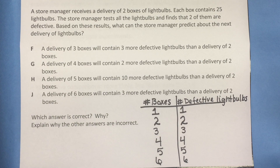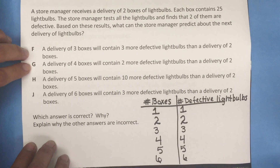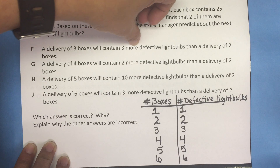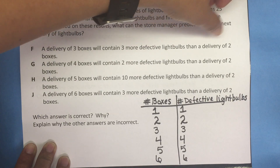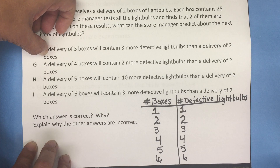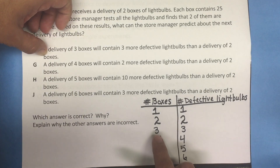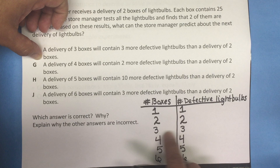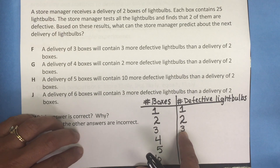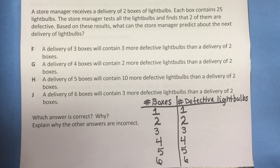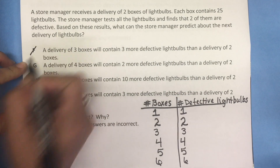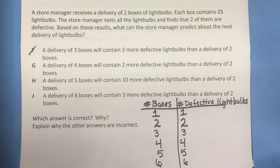Now let's look at our answer choices. Answer choice F says a delivery of three boxes will contain three more defective light bulbs than a delivery of two boxes. Well, three more would mean a total of five, but if I look at my table, three boxes would contain a total of three defective light bulbs — not three more, but three total. So answer choice F is not correct.